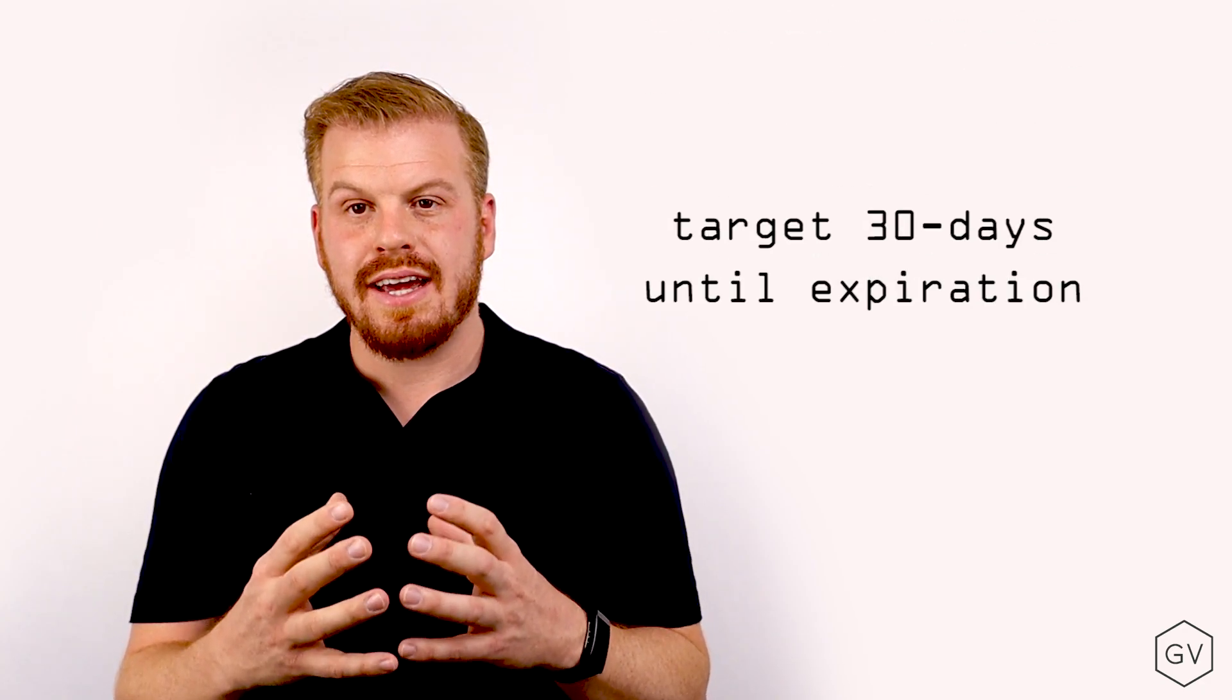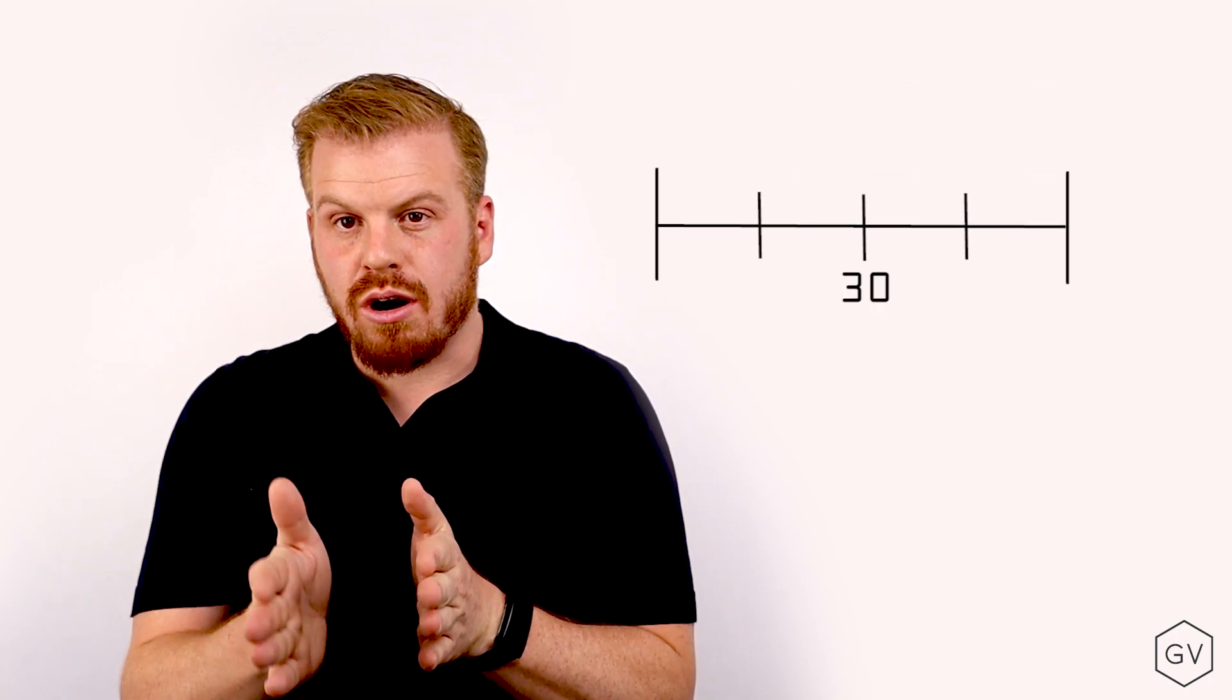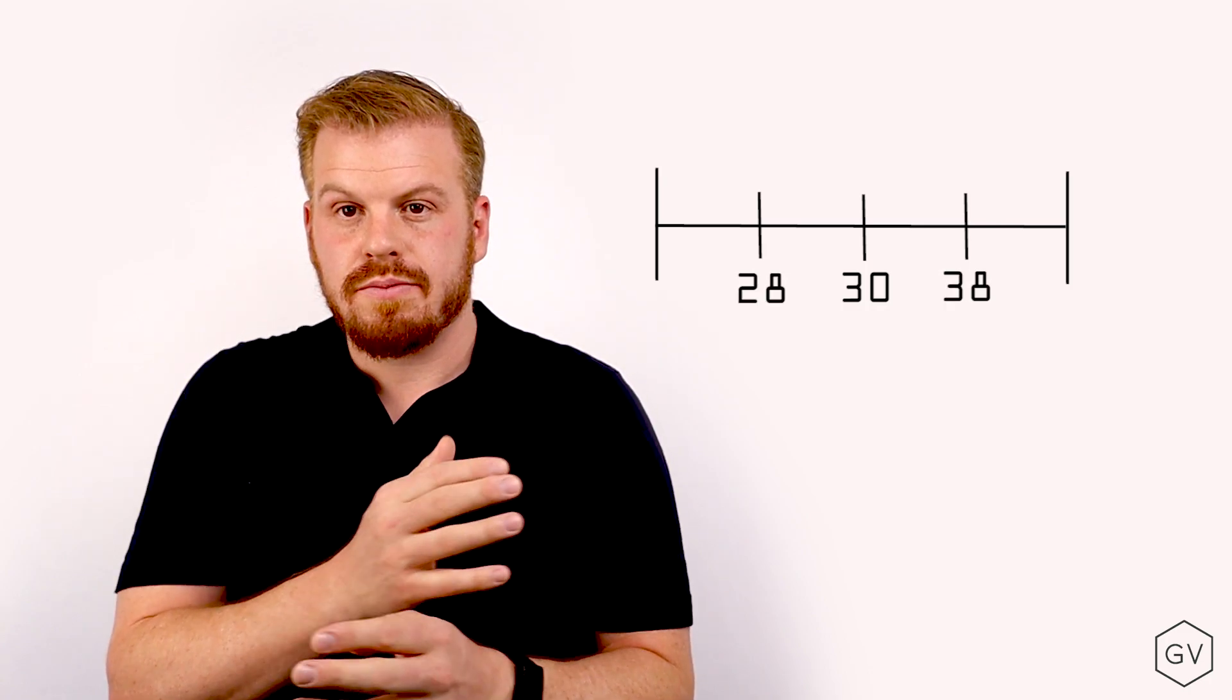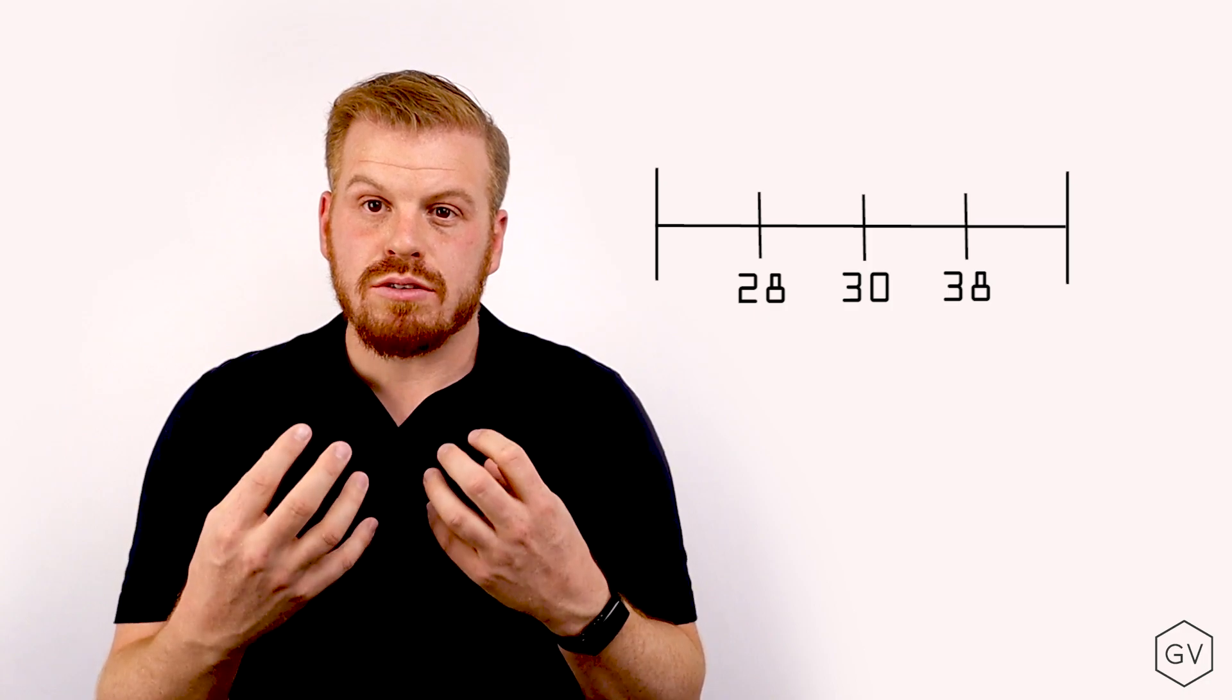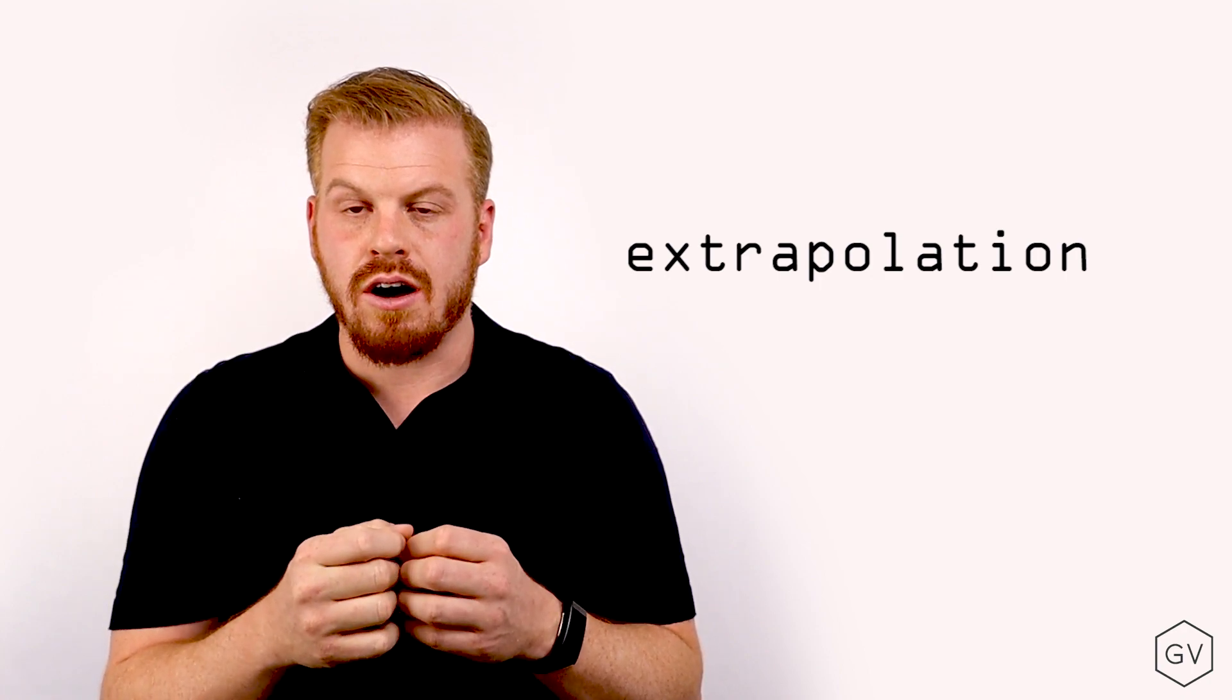Now, the second aspect is that we're targeting a 30 day constant maturity. So we do this by looking at options that have more than 30 days but are closest to 30 days, and the options that have less than 30 days but are closest to 30 days. Now, given those two series, what we do is we'll extrapolate between the two to target a 30 day constant maturity.